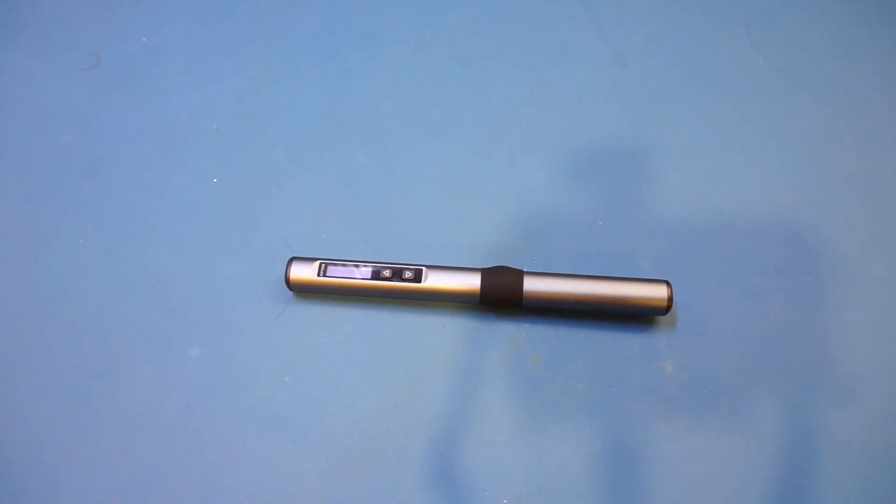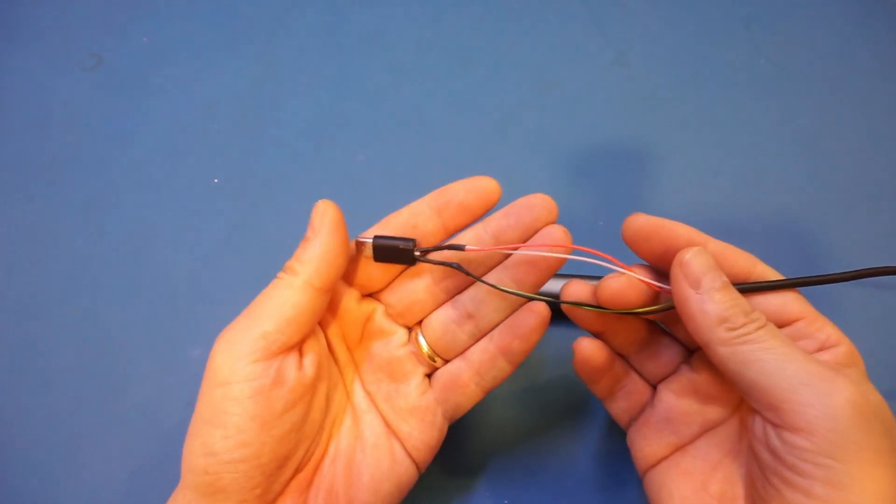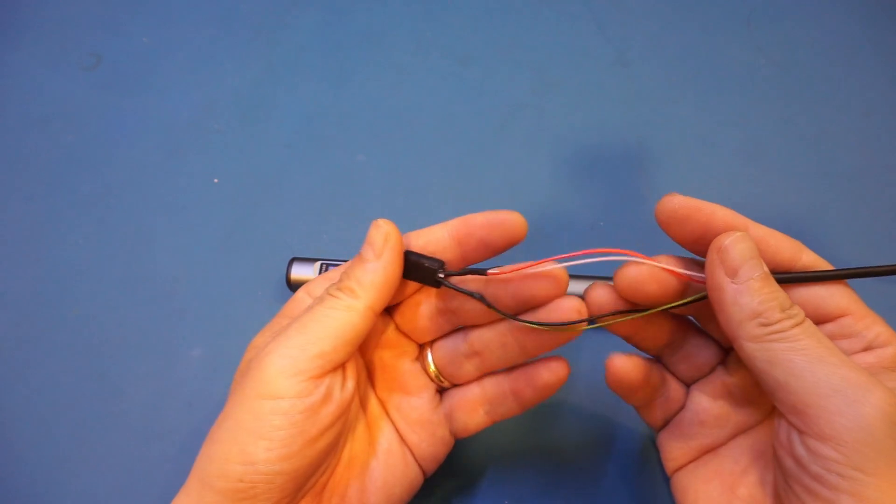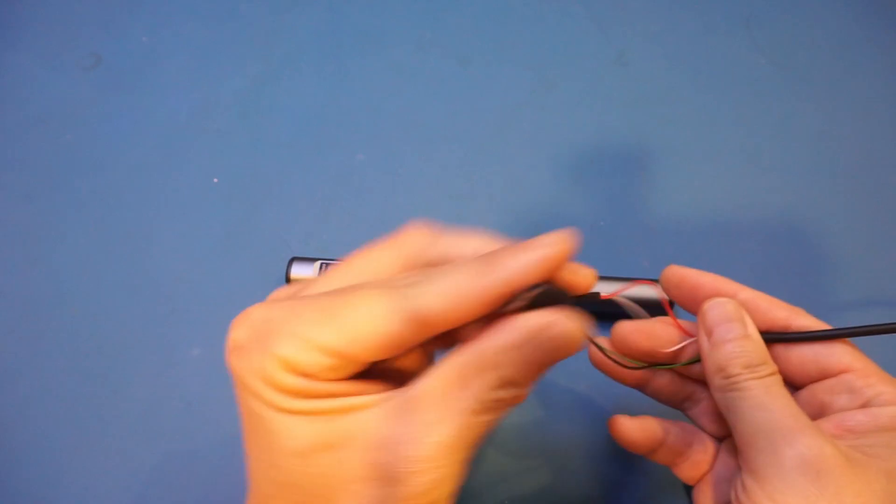This soldering iron can be powered by either a PD compatible USB power source or it can be powered by a standalone power supply with a USB-C connector. This is quite convenient as you can easily whip up a power supply if you have a 9 to 20 volt source and some spare USB cable. I use the same setup to test the PTS200 soldering iron a while ago. This USB cable is hooked up directly to a variable power supply - we only soldered the positive and negative onto this USB-C connector here.